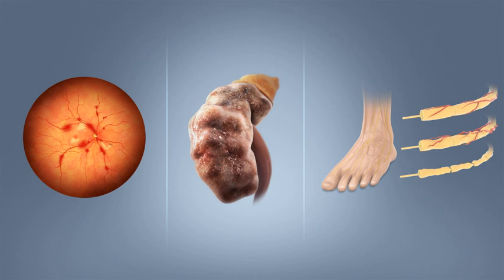Diabetes mellitus, DM, commonly known as diabetes, is a group of metabolic disorders characterized by high blood sugar levels over a prolonged period. Symptoms of high blood sugar include frequent urination, increased thirst, and increased hunger.